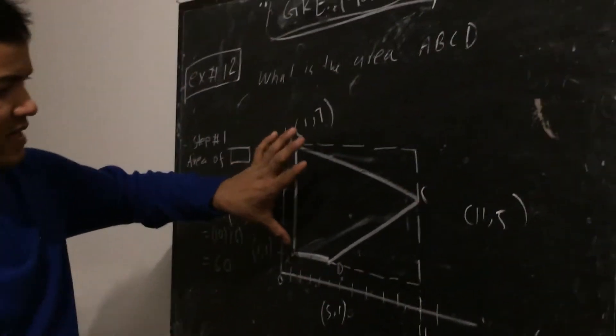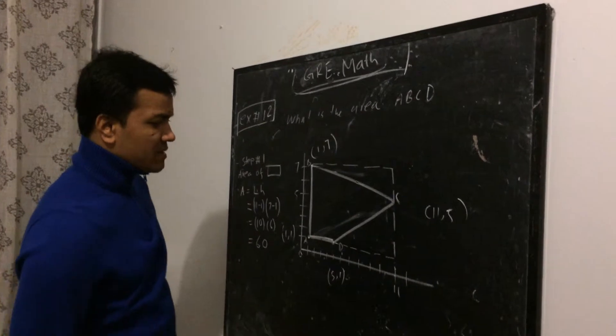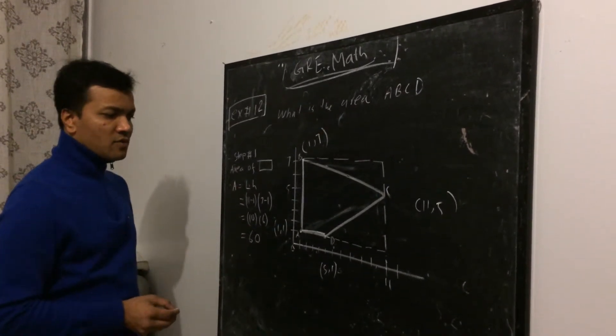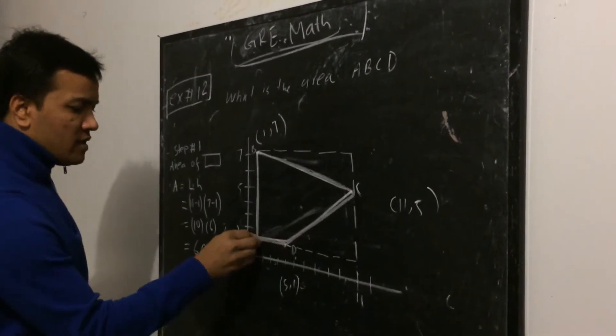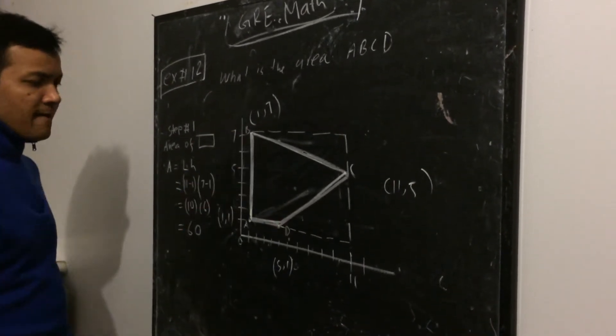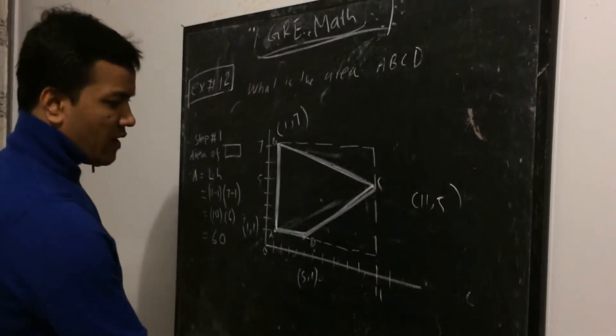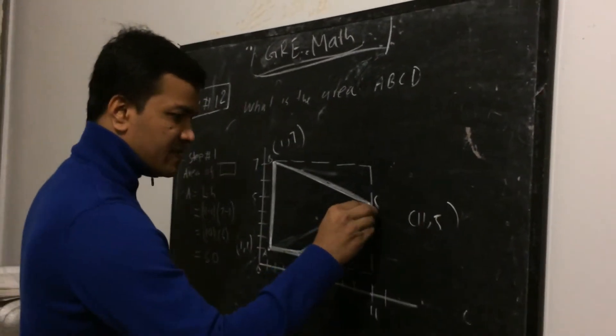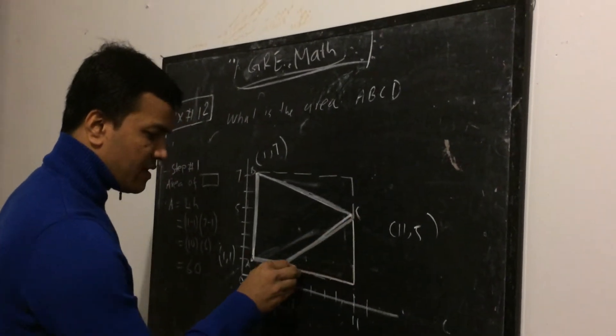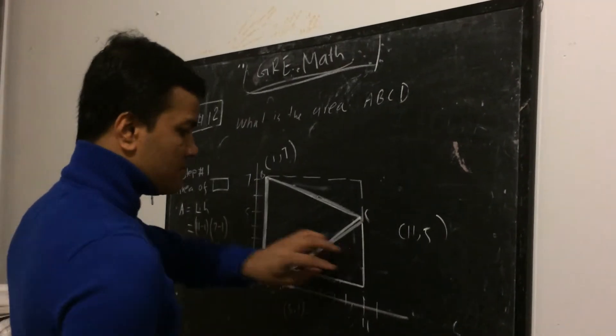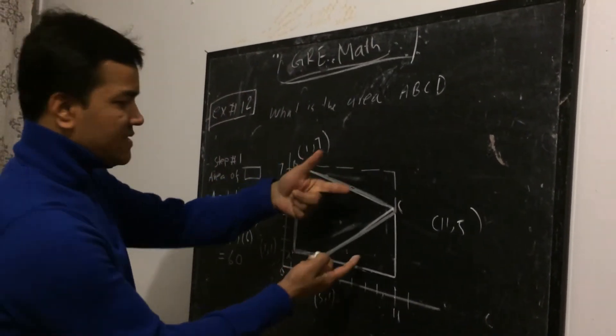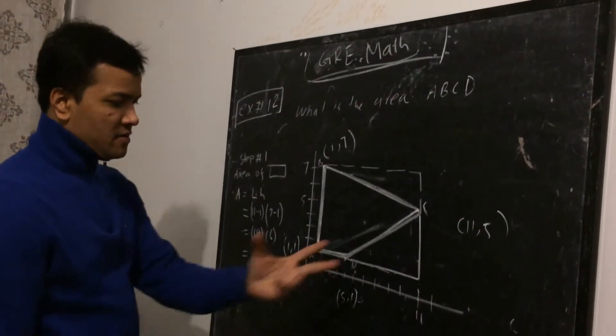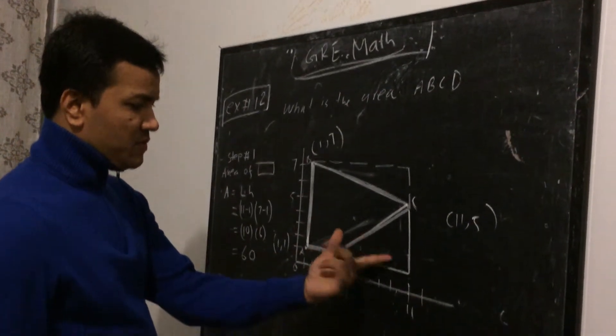So the area of the rectangle is 60, but that's not what we quite want. So we want the area of the quadrilateral. So how can we do that? Well, if we find the area of this piece, this piece over here, and this piece over here, we add this piece and subtract from here. So let's find this piece first. So step 2.